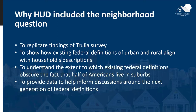Third, HUD wanted to understand the extent to which existing federal definitions of urban and rural obscure the stylized fact that half of Americans live in a suburban setting. Most existing federal definitions do not include a suburban category. However, data from the American Housing Survey show that more than half of homes in the U.S. are single-family homes surrounded by other single-family homes, a feature often associated with a suburban setting. Finally, HUD wanted to provide data to help inform discussions around the next generation of federal definitions, including the Census Bureau's 2020 Urban Areas and the Office of Management and Budget's 2023 Metropolitan Statistical Areas.